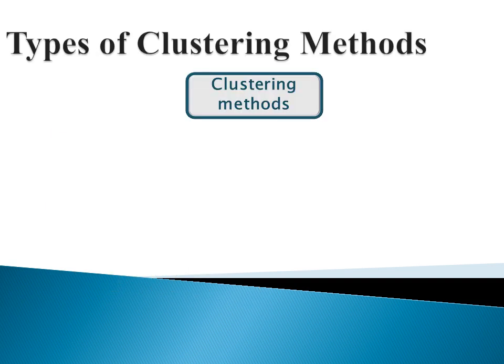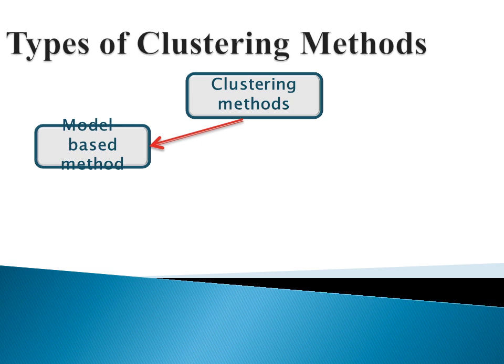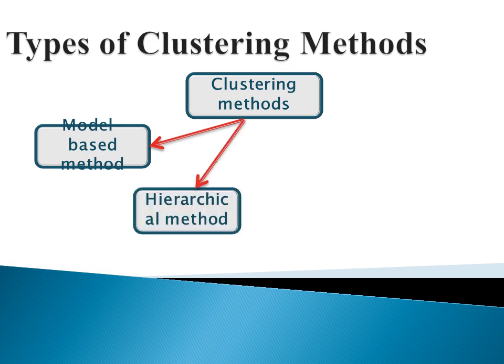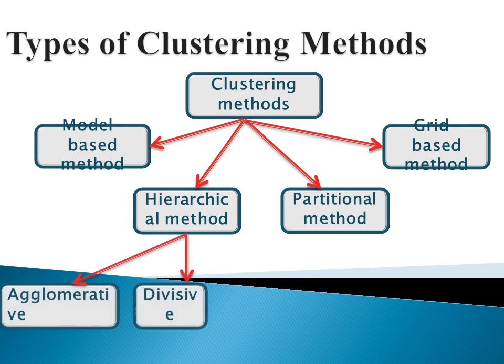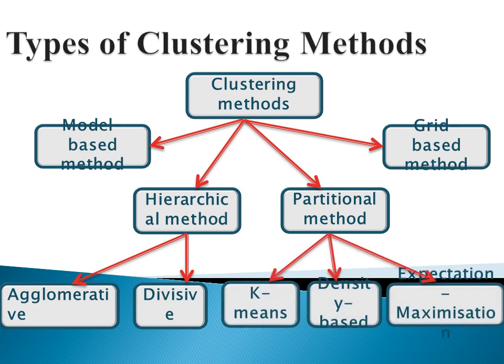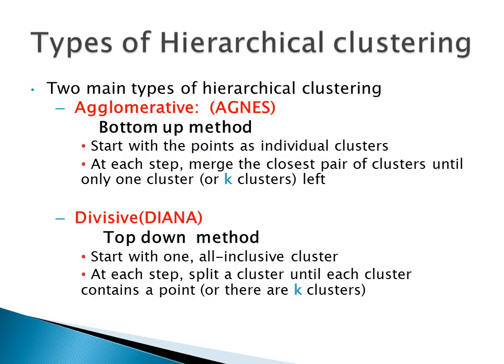The types of clustering methods. Basically these clustering methods can be classified into model-based method, hierarchical method, partitional method, and grid-based method. The hierarchical method can be classified into agglomerative and divisive. The partition-based method can be classified into k-means, density-based, and expectation maximization. K-means has been studied already. Hierarchical clustering is of two types: agglomerative and divisive.